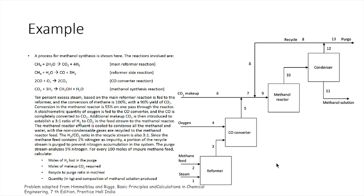Ten percent excess steam based on the main reformer reaction is fed to the reformer, and the conversion of methane is 100 percent with a yield of 90 percent for CO2. Conversion in the methanol reactor is 55 percent on one pass through the reactor.